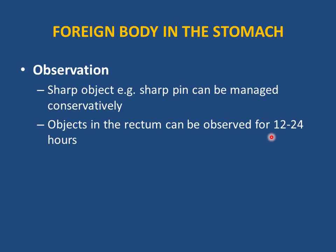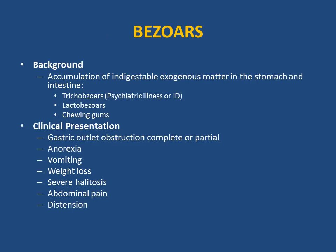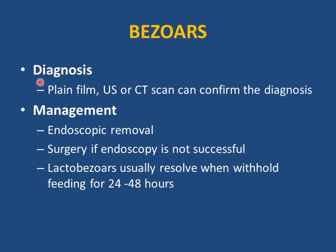Bezoars are accumulations of indigestible exogenous material in the stomach and intestine. They occur in children with psychiatric illness or intellectual disability. Trichobezoars (hair), lactobezoars (milk products), and chewing gums can be found. Clinical presentation includes gastric outlet obstruction, anorexia, vomiting, weight loss, severe halitosis, abdominal pain, and distension. Diagnosis by plain film, ultrasound, or CT scan. Management: endoscopic removal; if unsuccessful, surgery. Lactobezoars may resolve with 24-48 hours of NPO.